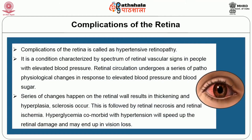Complications of the eye or retina lead to hypertensive retinopathy, a condition characterized by a spectrum of retinal vascular signs in people with elevated blood pressure. Retinal circulation undergoes a series of pathophysiological changes in response to elevated blood pressure and blood sugar. Changes on the retinal wall result in thickening and hyperplasia, sclerosis, followed by retinal necrosis and retinal ischemia. Hyperglycemia comorbid with hypertension will speed up the retinal damage and may end up in vision loss.